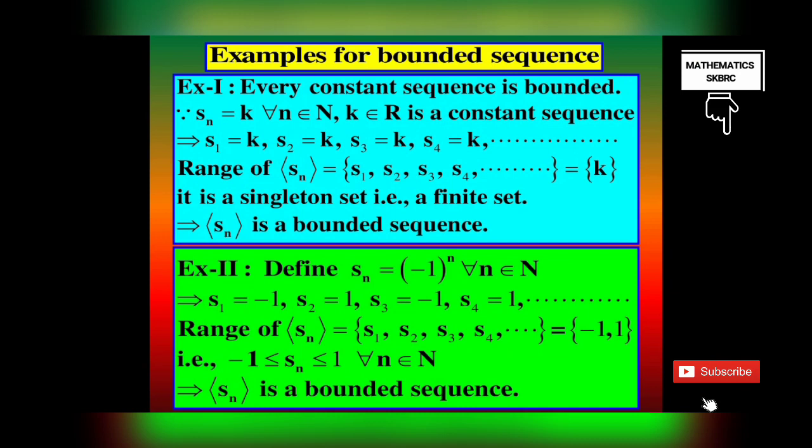Define the sequence SN = (-1)^N for all N belonging to N. If N is even, (-1)^N = 1; if N is odd, (-1)^N = -1. Here S1 = -1, S2 = 1, S3 = -1, S4 = 1, and so on. The range of SN = {-1, 1}, which is a finite set. Since finite sets are bounded, and -1 ≤ SN ≤ 1 for all N belonging to N, SN is a bounded sequence with lower bound -1 and upper bound 1.